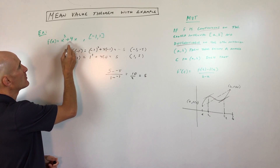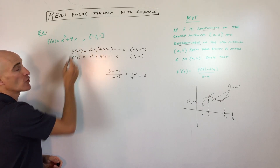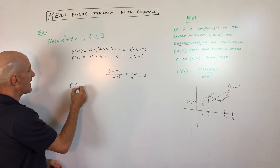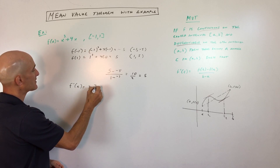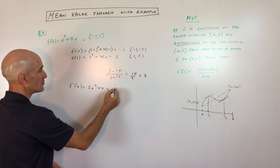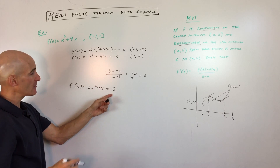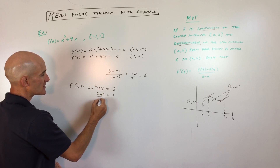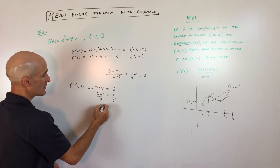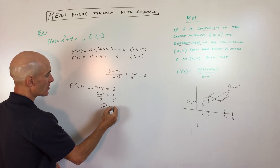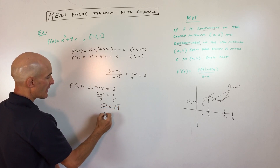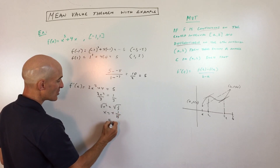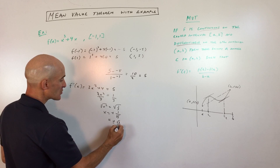Somewhere in between negative 1 and 1, the slope of the tangent line must be 5. We take the derivative: f prime of x equals 3x squared plus 4, and set that equal to the average rate of change, 5. Subtracting 4 from both sides gives 3x squared equals 1, dividing both sides by 3 gives x squared equals 1 third, and taking the square root gives plus or minus 1 over square root of 3, which rationalized is plus or minus square root of 3 over 3.